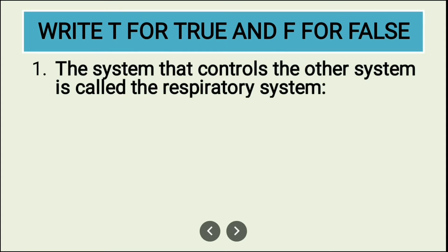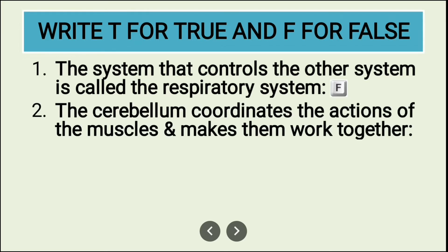First: the system that controls the other systems is called the respiratory system. Is it right? It is not right — it is false, so you have to write F.